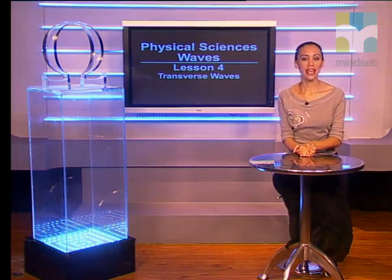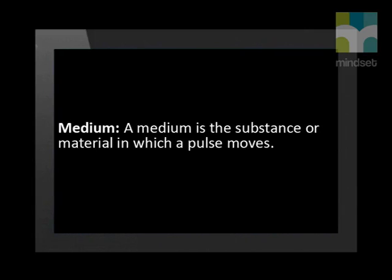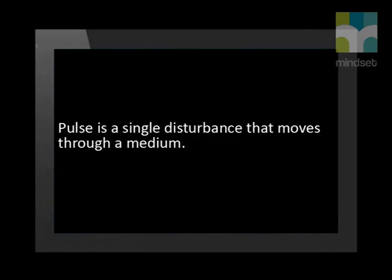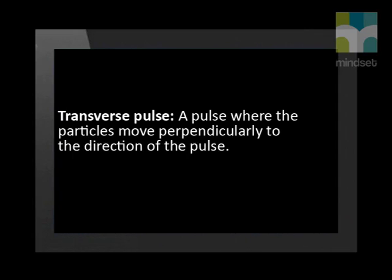Firstly, let's recap a few terms you should already know. A medium is the substance or material in which a pulse moves. A single disturbance that moves through a medium is called a pulse. A transverse pulse is a pulse where the particles move perpendicularly to the direction of the pulse.